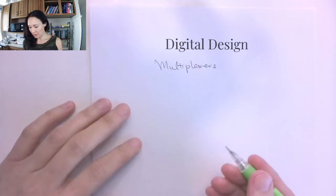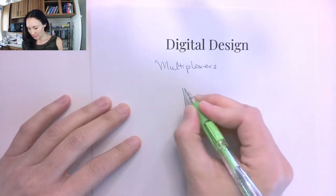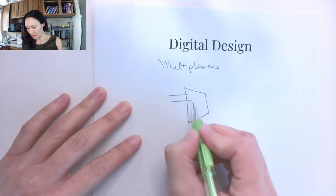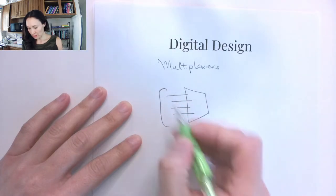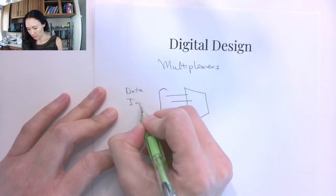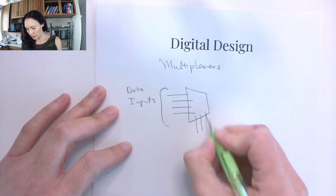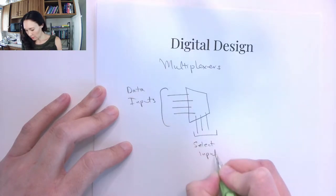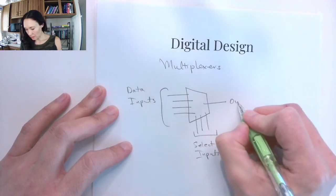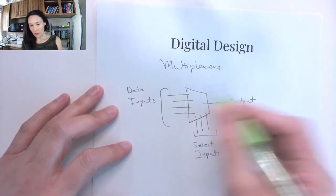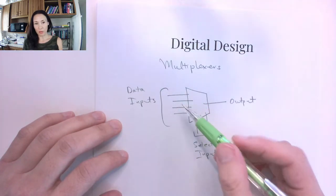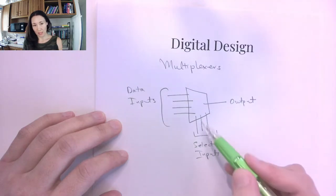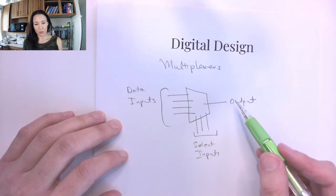Today I'm going to introduce the multiplexer. The multiplexer has a symbol like this — it looks like a sideways trapezoid. What it does is it takes in inputs; these are the data inputs, and there are other inputs down here called the select inputs, and there's an output. So the multiplexer is a circuit that selects inputs from the data inputs based on inputs that come in on the select line, and then pipes them out to the output.